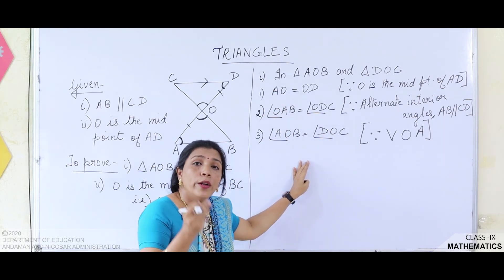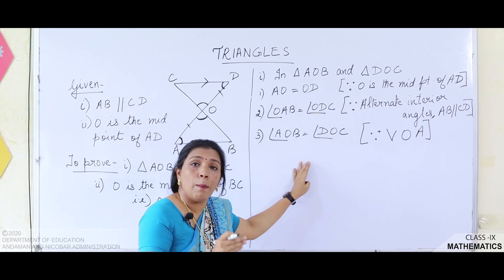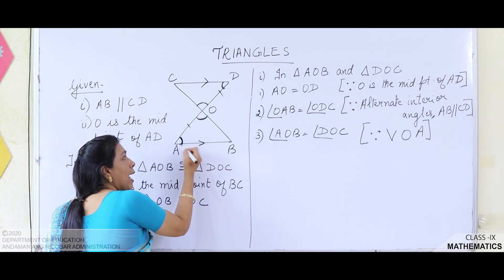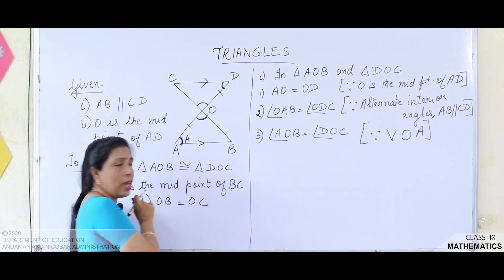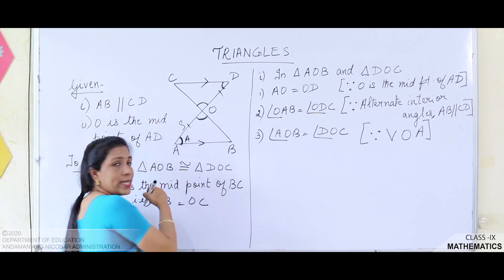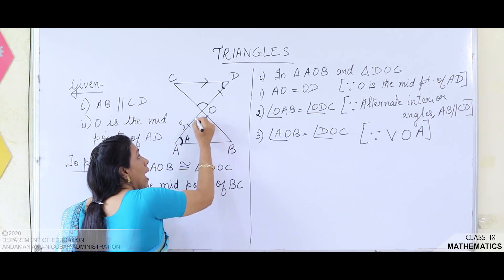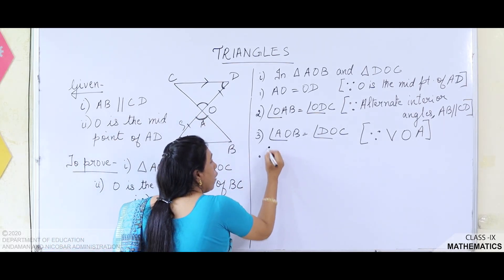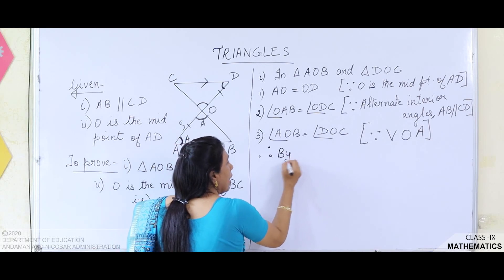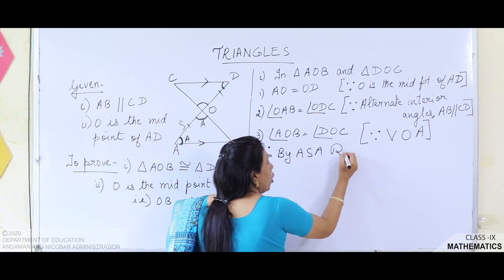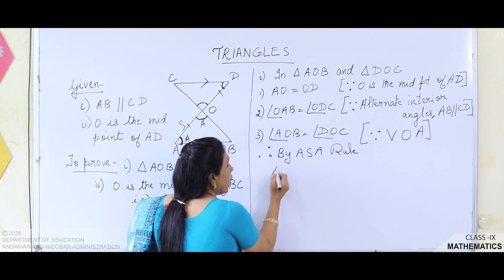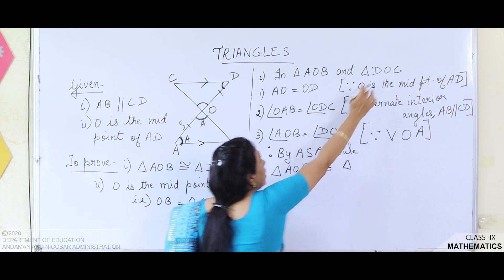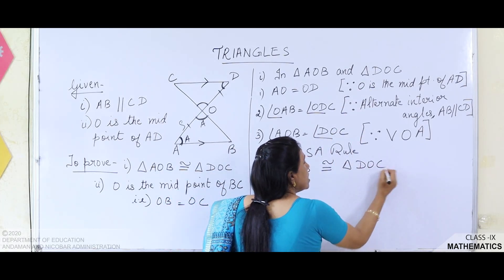Now, which congruence rule applies? Taking any one triangle: we have an angle, then a side, then an angle — so it is ASA. Therefore, by the ASA congruence rule, triangle AOB is congruent to triangle DOC.